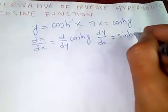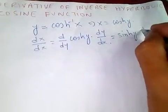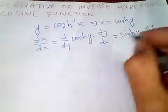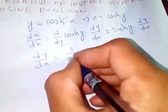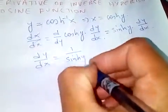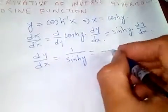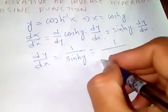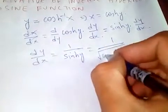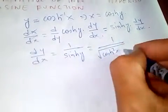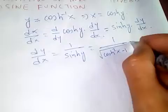Therefore, solving for dy/dx gives us 1 over sinh(y). We know that sinh(y) equals the square root of cosh²(y) minus one, which is the square root of x² minus one since cosh(y) equals x.